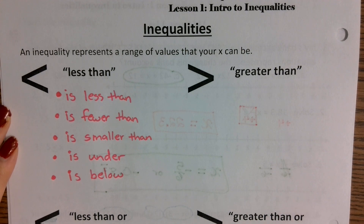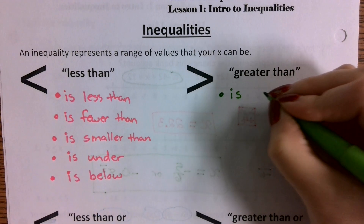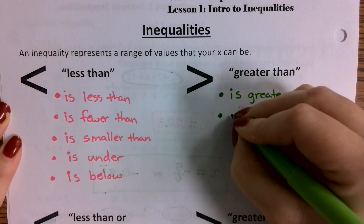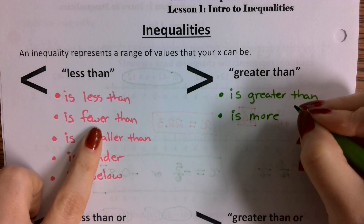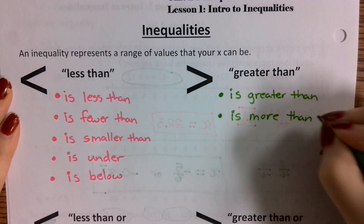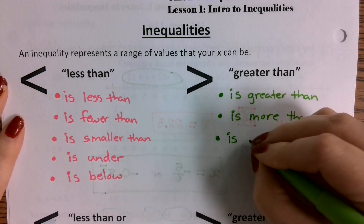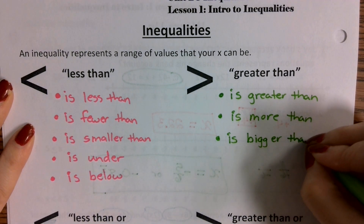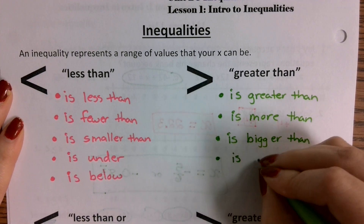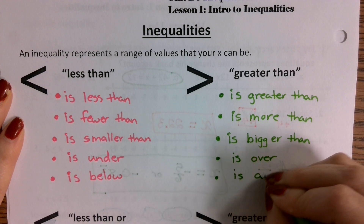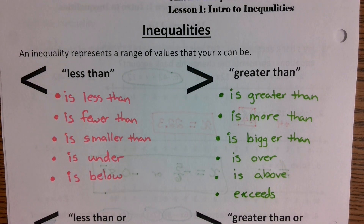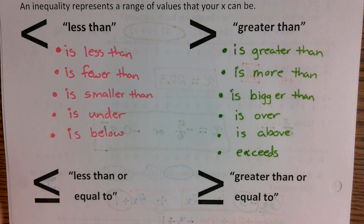For 'greater than': is greater than, is more than — the opposite of fewer than — is bigger than, is over, and is above. There's also the extra term 'exceeds,' which means it goes beyond a value. This section is very terminology heavy.